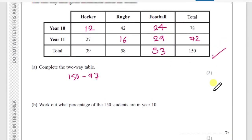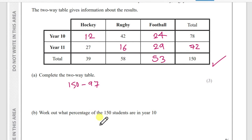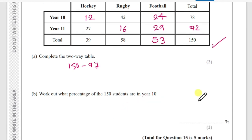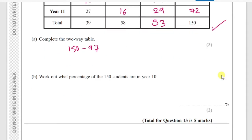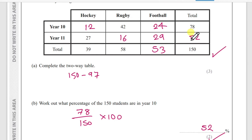Part (b): work out the percentage of the 150 students that are in Year 10. There are 78 students in Year 10. Write as a fraction: 78/150, then multiply by 100. 78/150 × 100 = 52%. So 52% of students are in Year 10.